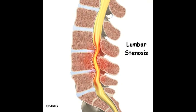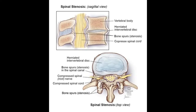Lumbar canal stenosis is a disease in which there is narrowing of the space around the spinal cord and the roots coming out of it. Because of the compression of the roots and the spinal cord, the patient complains of radicular pain in both the limbs or one of the limbs. Because of the degenerative nature of the disease, the patient also complains of low back pain.